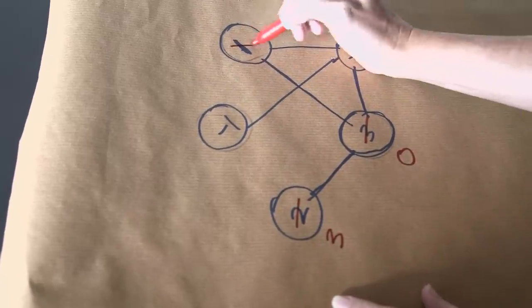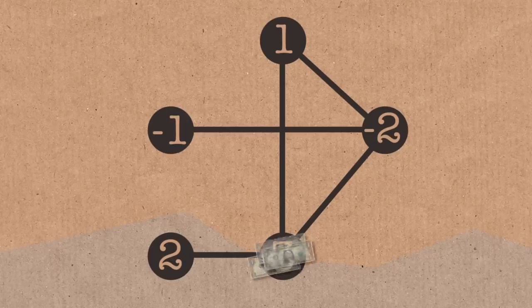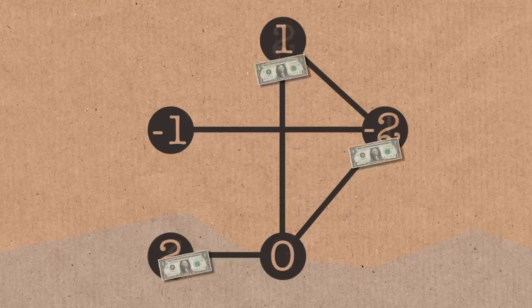two goes up to three, one goes up to two. But here's something good, which is that this is now negative one instead of negative two, which is better for getting everyone out of debt.